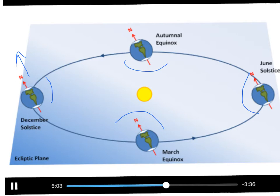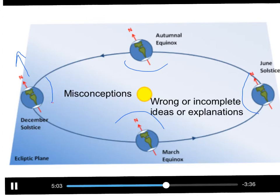Why do I bring this up again? It's important to know what causes the seasons, but that's not the main reason. I'm telling you this because the tendency people have to make assumptions and jump to conclusions causes what we call in science misconceptions — wrong or incomplete ideas or explanations about anything. They're very common because the human brain is designed to solve problems quickly, so we don't always think things through. The scientific method is actually a tool for overcoming misconceptions; it's a way to avoid assumptions and really get at the truth.